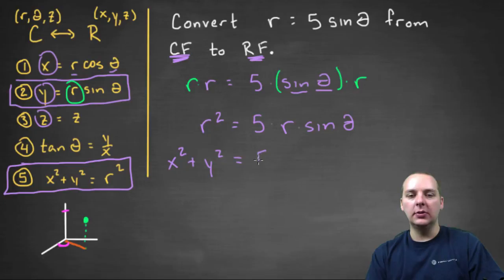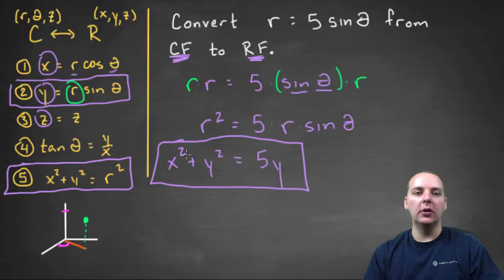so y equals five y. So you needed that extra factor of r in there to make it look like some of the conversions that we had handy.